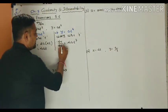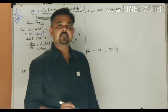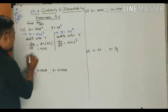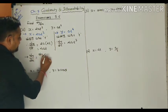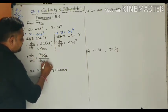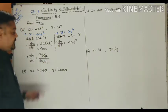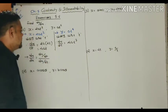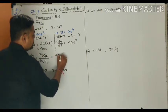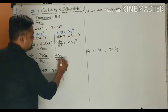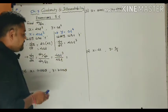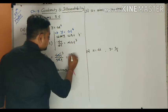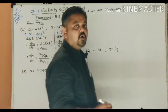Now we have found dx/dt and dy/dt. To find dy/dx, we divide: dy/dx = (dy/dt) / (dx/dt), where dx/dt ≠ 0. So dy/dx = 4at³ / 4at. Here 4a and one factor of t cancel, giving dy/dx = t².